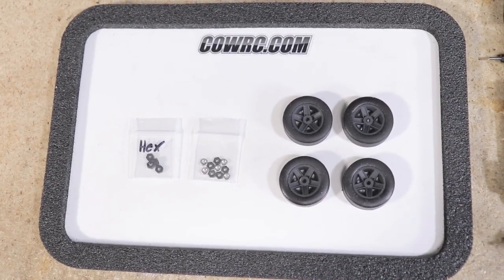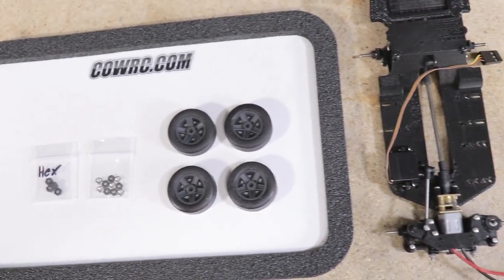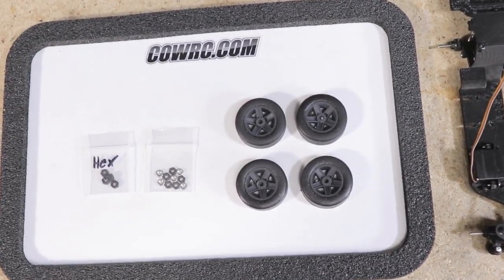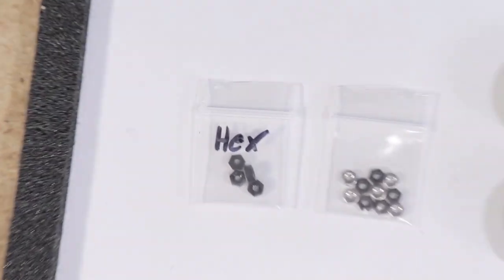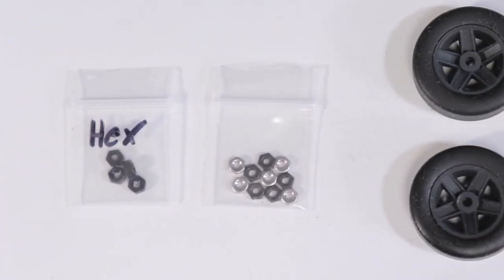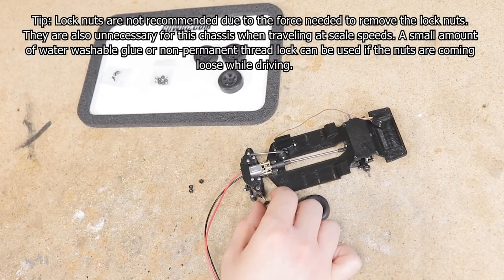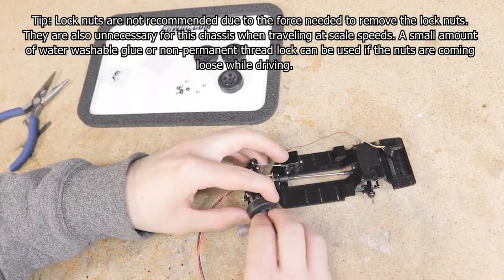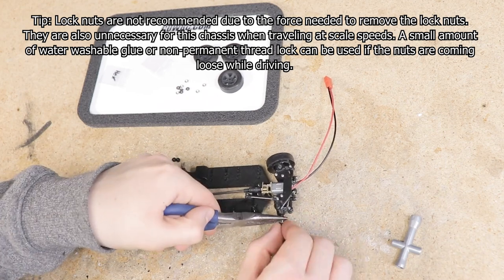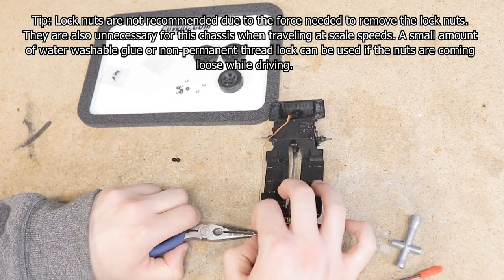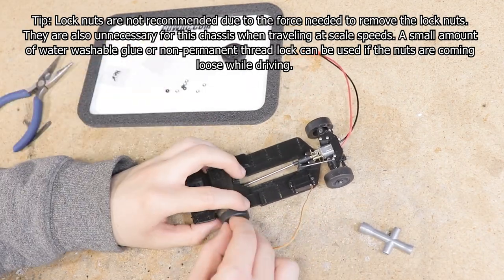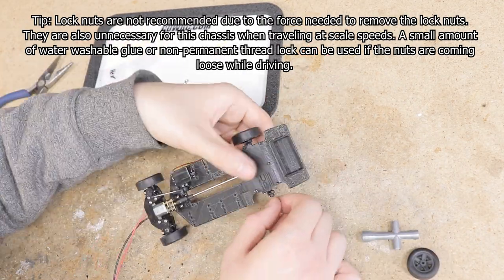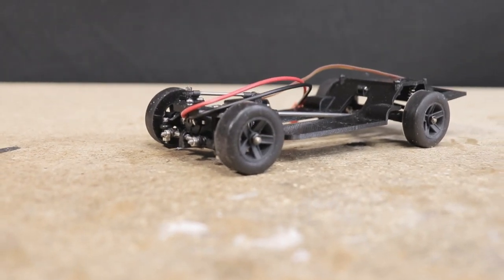Finally, we can install the wheels. Your wheels may look different depending on which option you chose, but with some wheels like these OEM style ones, they include a extra set of hex wheel mounts. These will be needed to space out the wheels so they fit the chassis. The hex wheel mounts can be threaded on the axles, then the wheels can be placed on and secured with a nut. You can use a mild adhesive such as water washable glue to help keep the wheel nuts from coming loose. And with the wheels on, the chassis is now fully assembled.